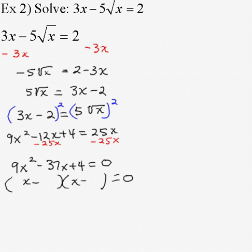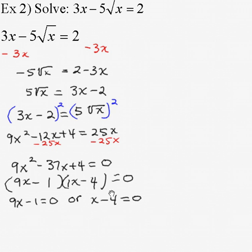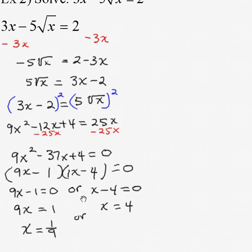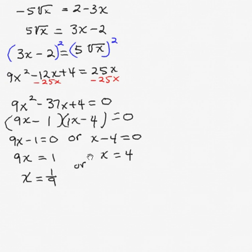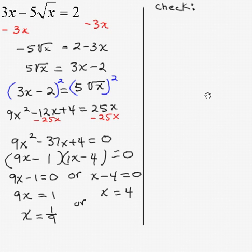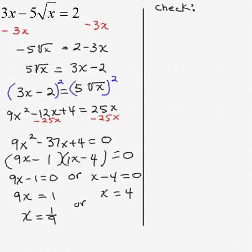The fundamental theorem of algebra says our largest exponent tells us how many answers we're looking for. We started with x to the first — one solution — but now our equation is degree two, which means we're looking for two solutions, and yes, there could be an extraneous root. We factor using trial and error: 9x minus 1 times x minus 4. Using the zero product property, if 9x minus 1 equals 0 then x equals one ninth; if x minus 4 equals 0 then x equals 4. We have two solutions and were only expecting one, so we must check both.